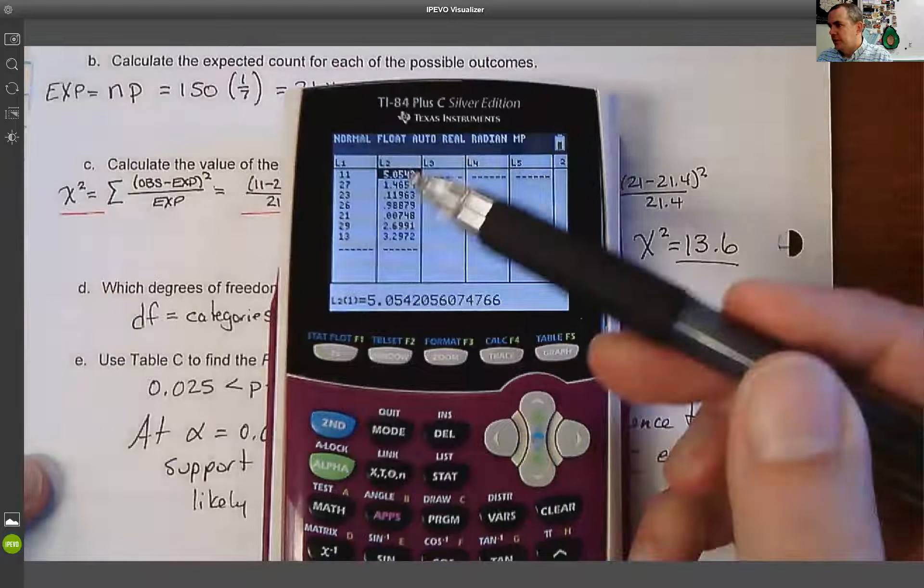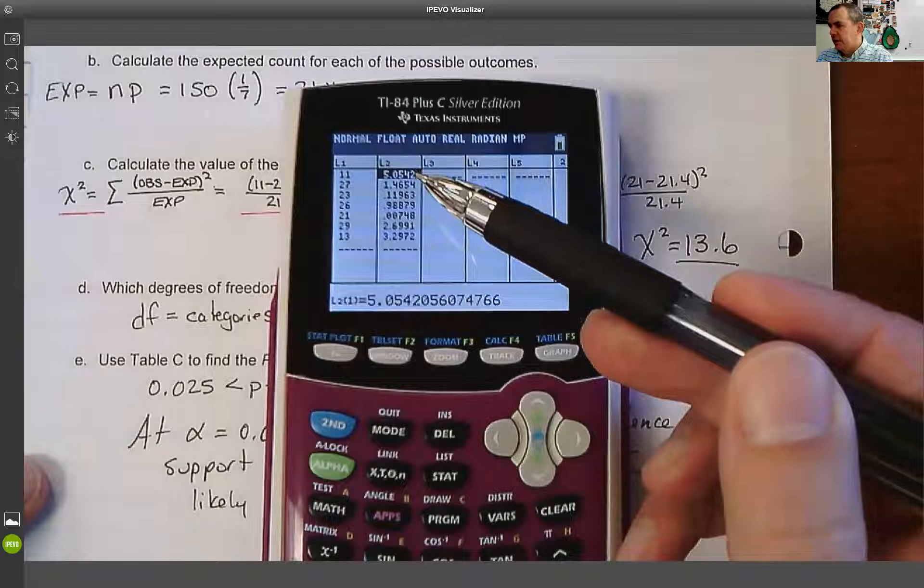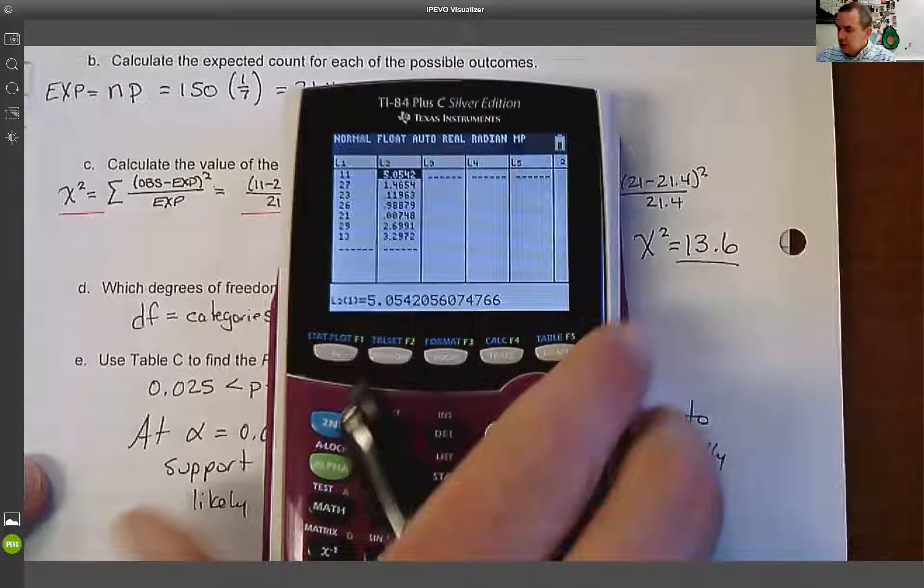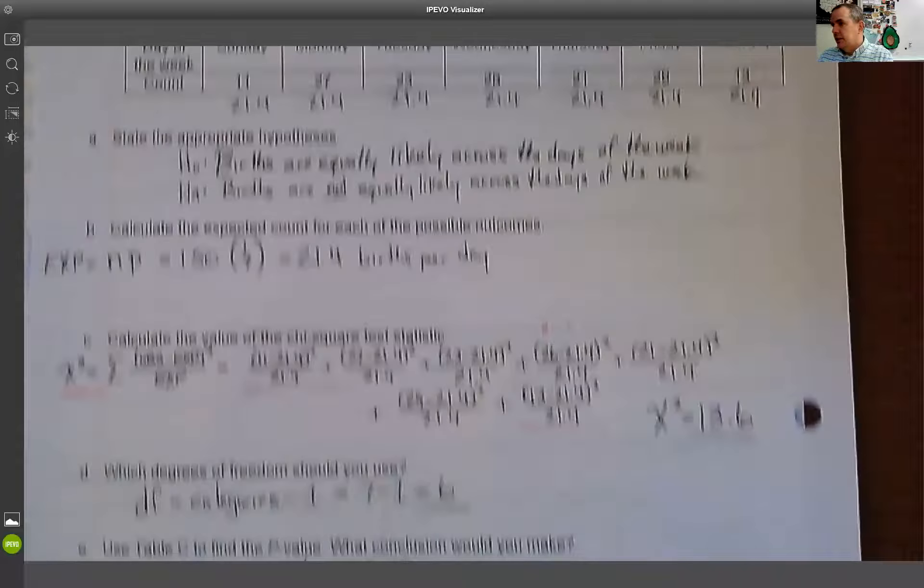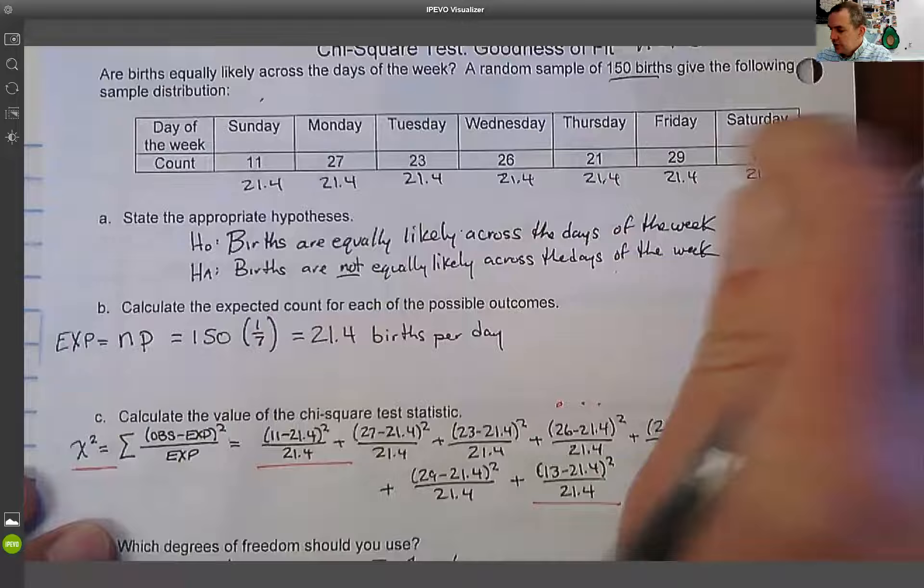And if we take a look at these component values, it looks like the two big ones are, it looks like it's the first one and the last one. So in other words, when I look at this, the first one and the last one, Saturday and Sunday.